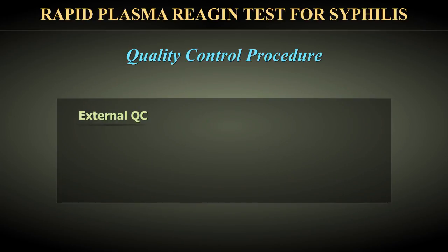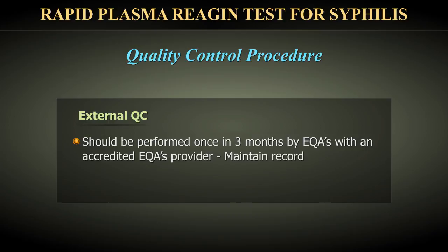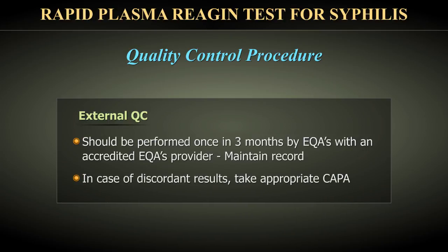External quality control should be performed once every 3 months with an accredited external quality assurance scheme provider. In case of discordant results, take appropriate corrective and preventive actions.